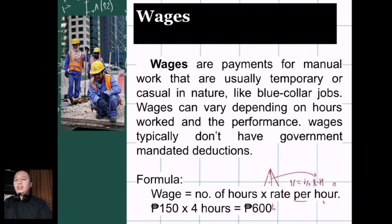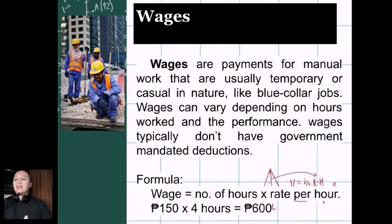Now let's go to wages. Wages are payments for manual work that are usually temporary or casual in nature — blue-collar jobs. These are jobs that require much more physical effort, like construction, mining, and manufacturing. Wages can vary depending on hours worked. Most of the time, wages do not have government-mandated deductions because we are talking about a per-hour basis.